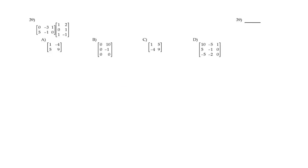Question number 39: I'm going to multiply two matrices. Before I start, I should write the order of each matrix. The first matrix is 2 rows by 3 columns. Since the number of columns of the first equals the number of rows of the second, I can multiply them. If they're not equal, you cannot multiply. The result will be a 2×2 matrix.